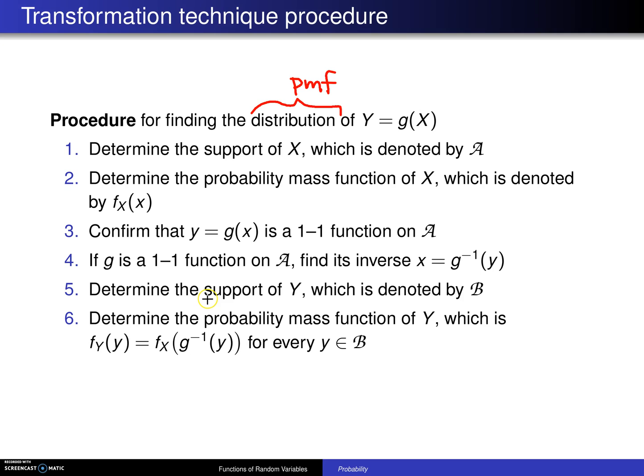Step five, determine the support of the random variable Y, which is denoted by script B.